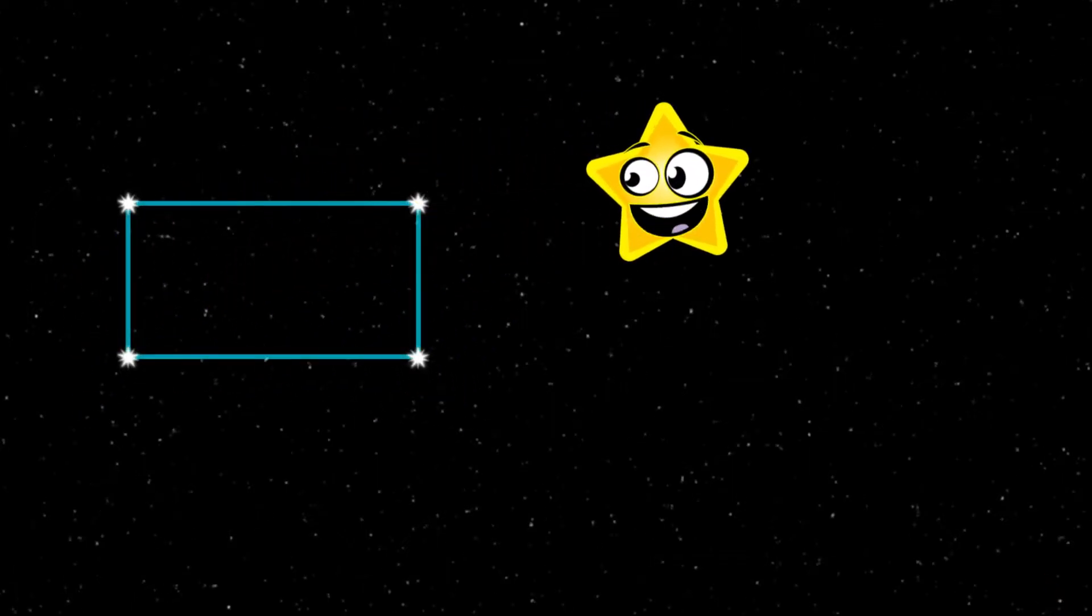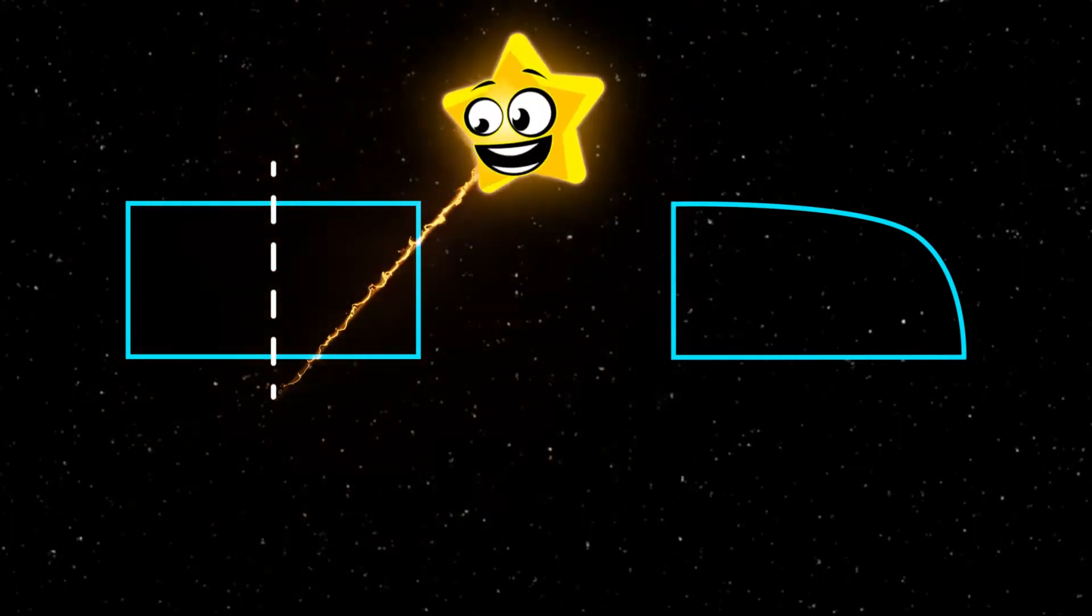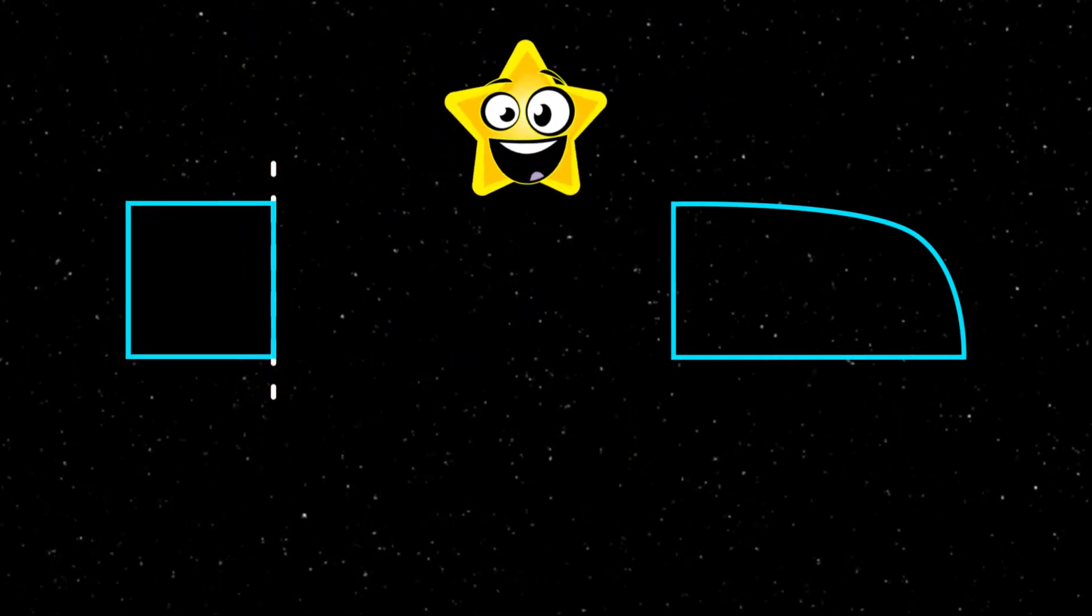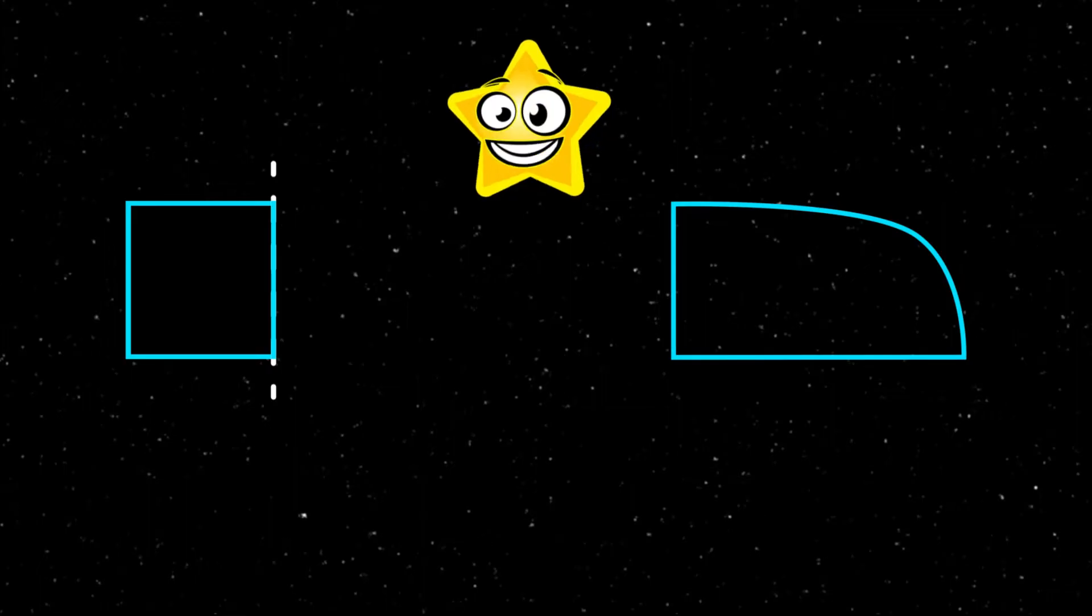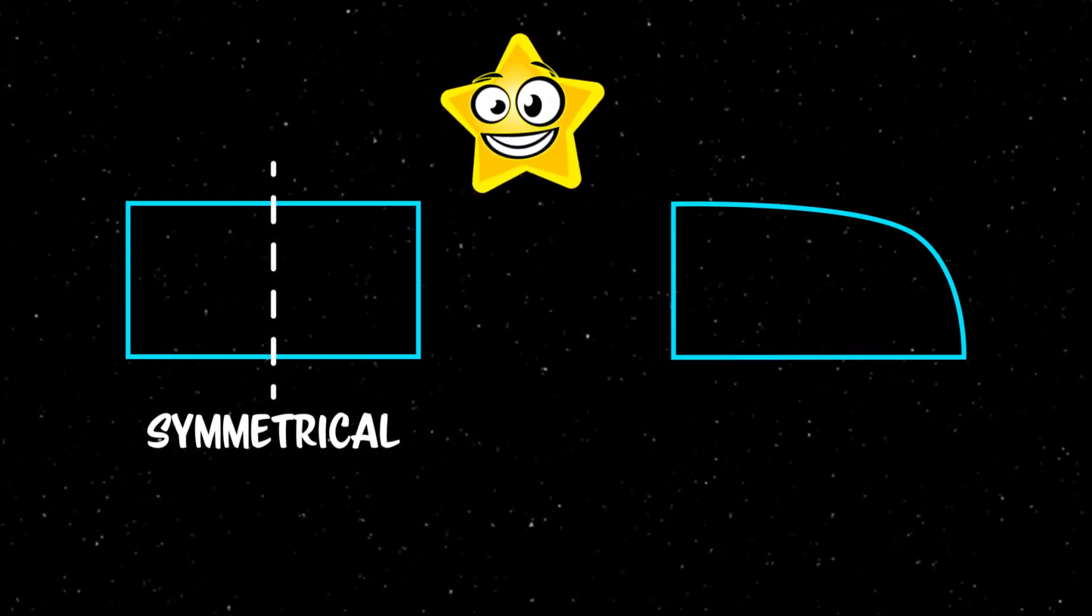Look at these two shapes. One is symmetrical, one is not. When we draw a line in the middle of this one, you can see that the two sides match up when we fold it in half. That shape is considered symmetrical because it contains a line of symmetry.